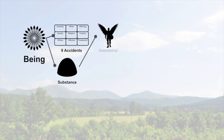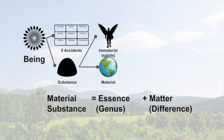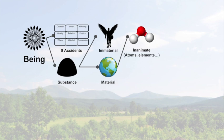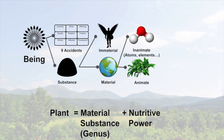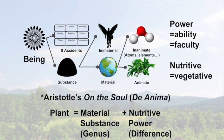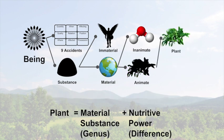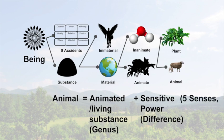We can split substance into immaterial substances, or spirits, and material substances. Material substances can be split into inanimate things, like atoms and elements, or animate things. A plant, for example, is a material substance—that's the genus—and it has the nutritive power, that's the difference. Power is an ability or faculty. Nutritive is also called vegetative; this is the basic power of life, of self-animation. This comes from Aristotle's On the Soul, or De Anima. Animals are animated living substances—that's the genus—and the sensitive power—that's the difference. The sensitive power is the five senses, also called sentience.